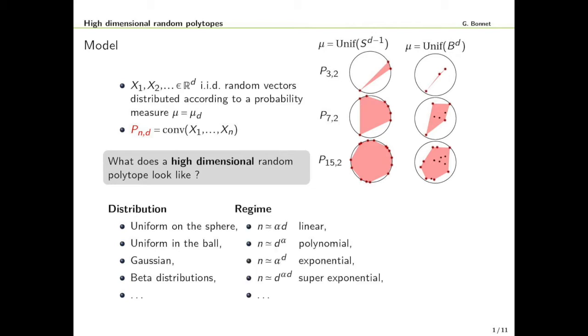Since we are interested in what happens as d goes to infinity, we also need to specify how fast grows N with respect to d. For example, we can say we are in the linear regime if N is a constant times d, or we could consider other regimes such as polynomial, exponential, super-exponential regimes.